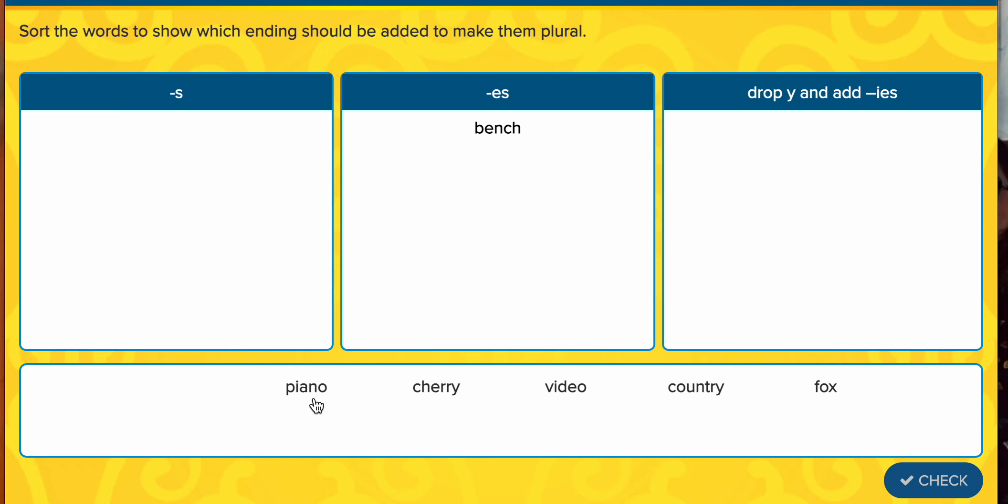P, e, p, e, hmm. P, e, a, n, o. Piano. That's five letters. Let me look at that ending. There's nothing special really about it. It doesn't end in a y. It doesn't have that hissing sound. So I think it's just going to be an s. Next, we're looking at cherry. Cherry. Ch, e, r, e, cherry. It ends in a y. Automatically, I know I dropped that y, add i, e, s. That's going here.